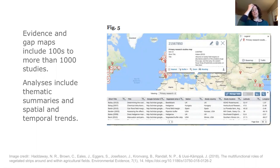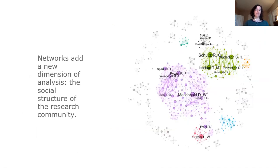However, as Nakagawa and colleagues pointed out in their 2019 paper introducing the concept of research weaving, there are some real missed opportunities with regard to what more these evidence and gap map data can tell us, and this is where network analysis can come in. Network analysis essentially adds an additional social dimension in which we can begin to understand how this body of knowledge is structured through collaboration and citation behavior, and this could ultimately inform recommendations for future research as well as aid in the discovery of additional relevant literature.